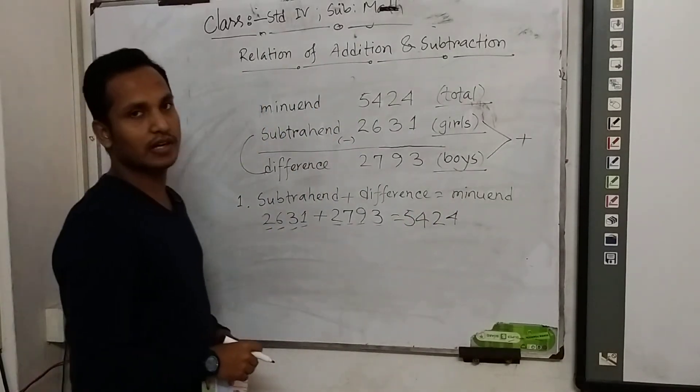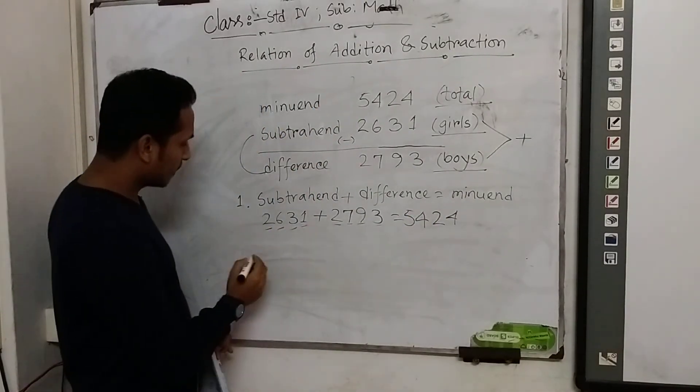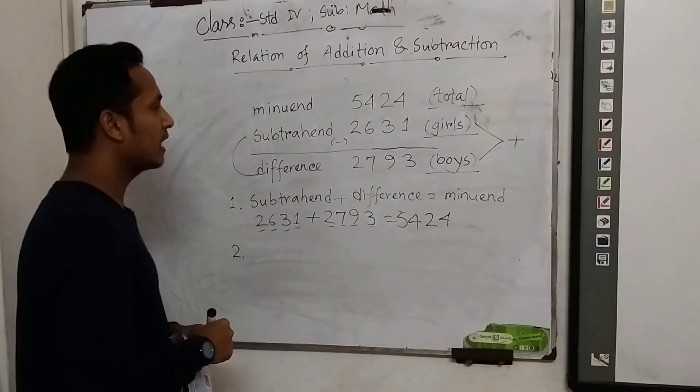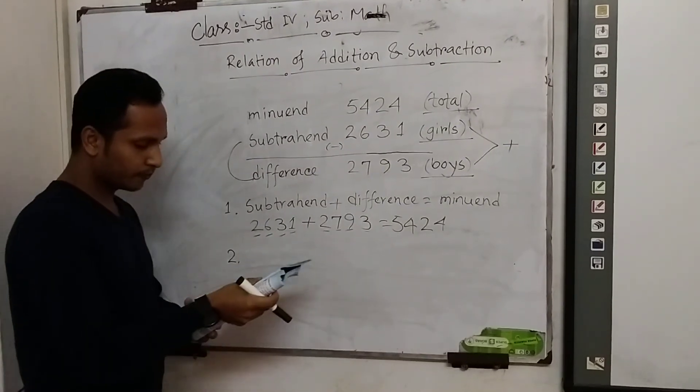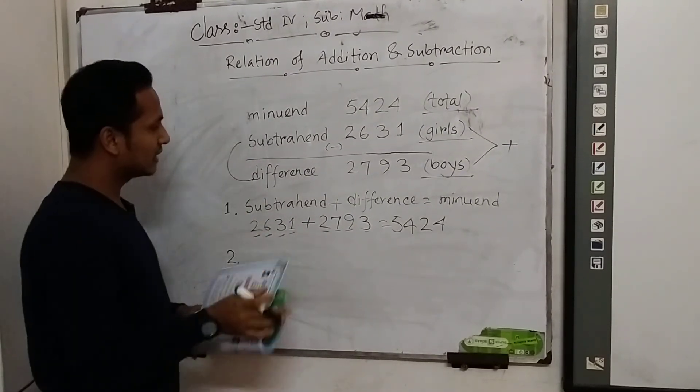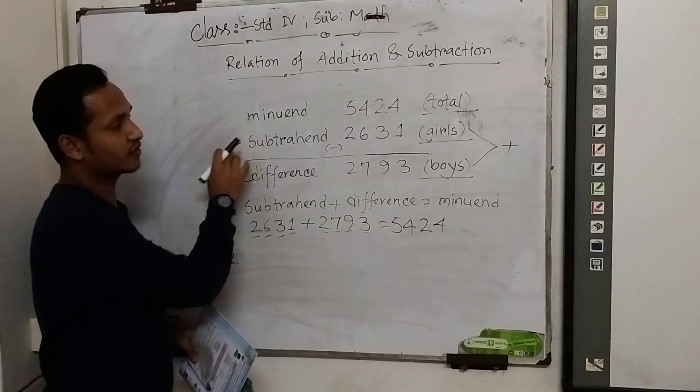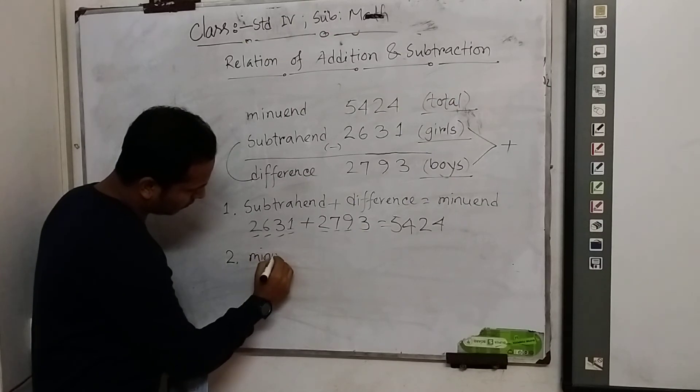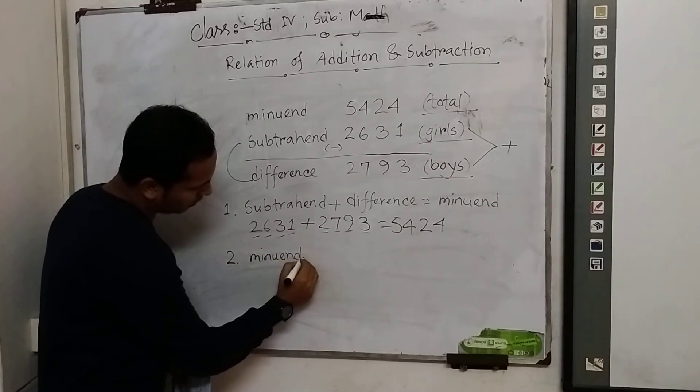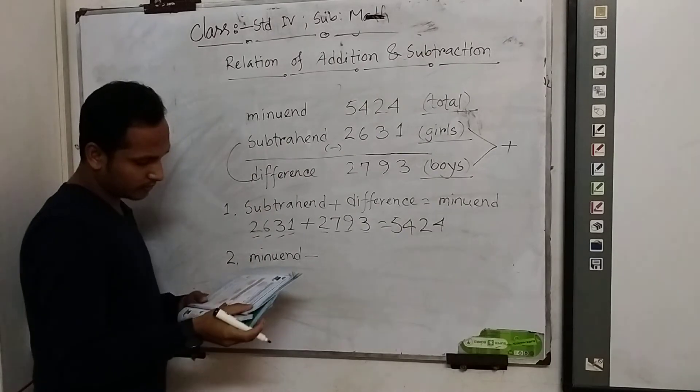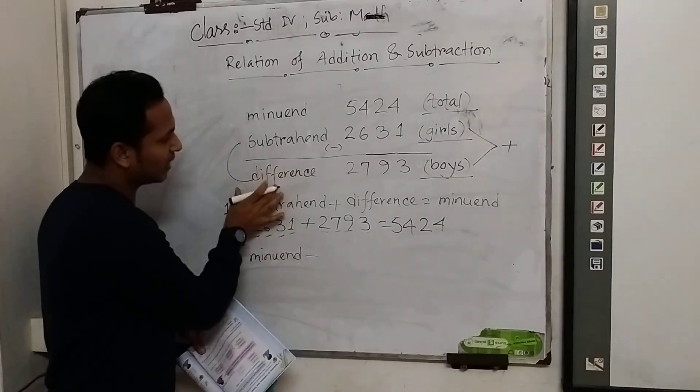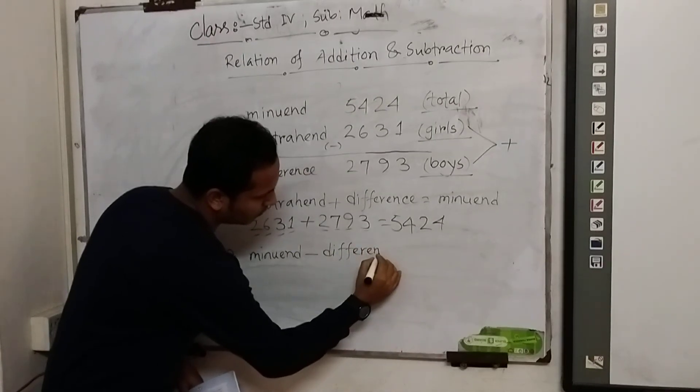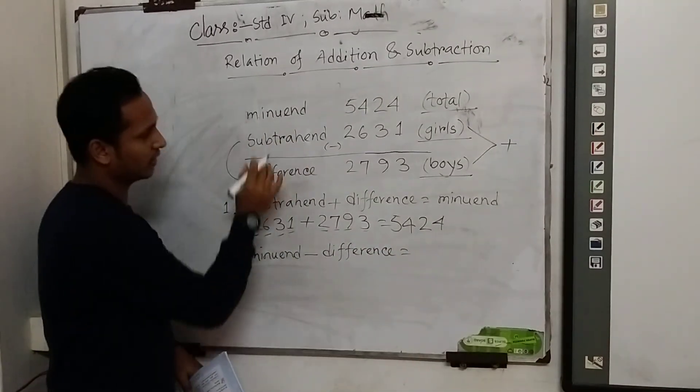Second equation: minuend minus subtrahend equals difference. And third: minuend minus difference equals subtrahend.